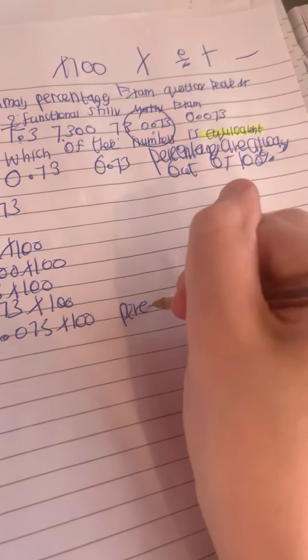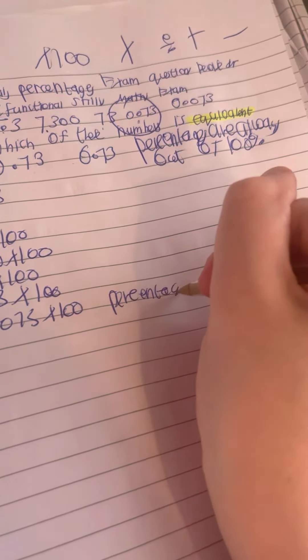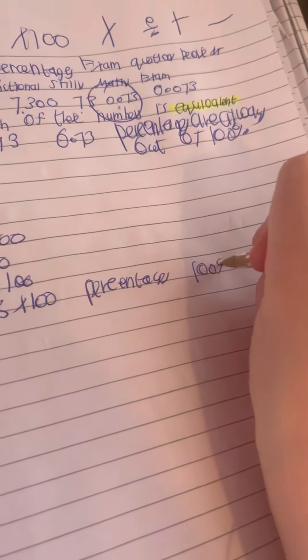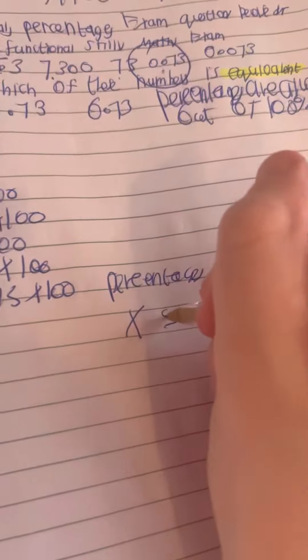Because percentages are out of 100%, so when you percentage it, you do times, then you divide it first.